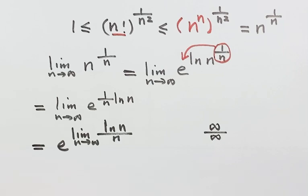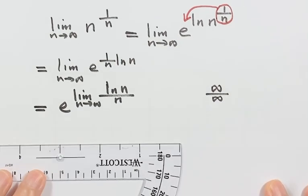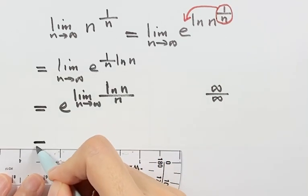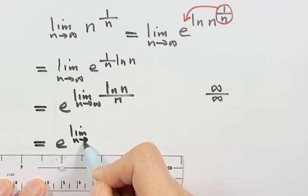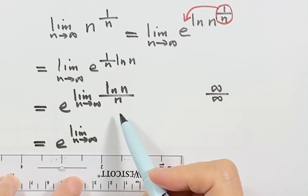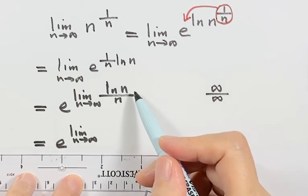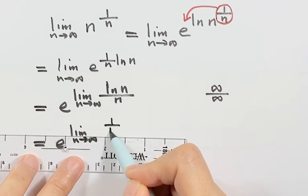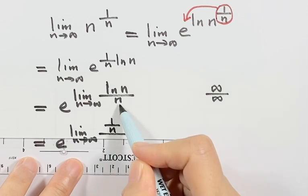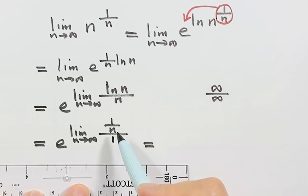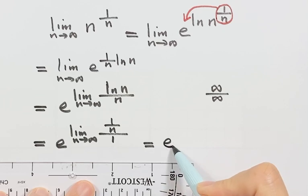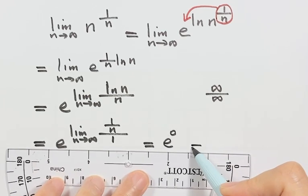So for this limit we can use L'Hôpital's rule. We apply L'Hôpital's rule and for the numerator and the denominator we both take a derivative. The derivative of the numerator is 1 over n, and the derivative of the denominator is just 1. As n goes to infinity, 1 over n goes to 0, so this limit is just 0. That's why here we have e to the power of 0, which is just 1.